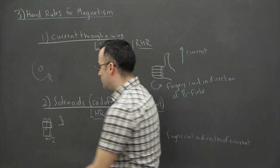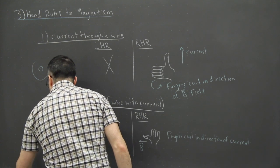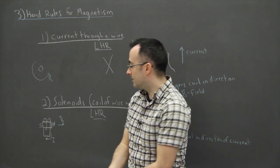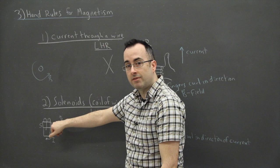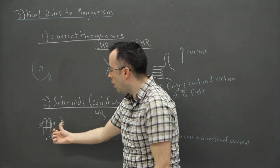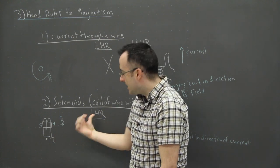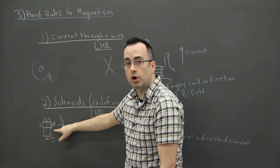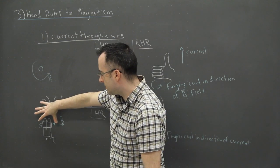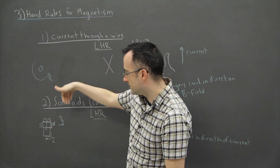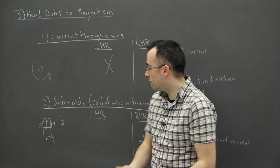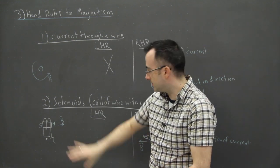That tells me there's a north pole on the right side and a south pole on the other end, because magnetic field lines point away from north. If I reversed the battery direction, the north and south would flip because my current would reverse, and my thumb would point the other way. That's very useful for understanding electromagnetism.